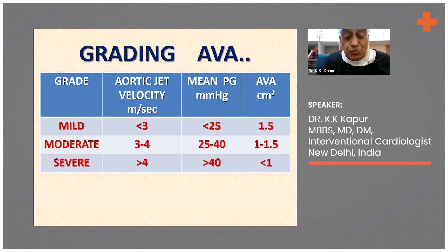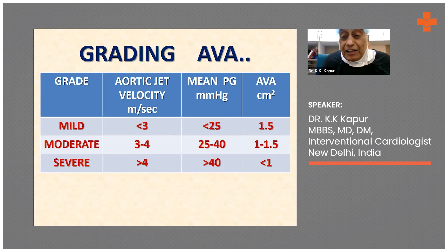If the peak velocity across the aortic valve is between 3 to 4 meters per second, and the mean pressure gradient is between 25 and 40, and the aortic valve area is between 1 and 1.5 centimeters squared, then we call it moderate aortic stenosis.